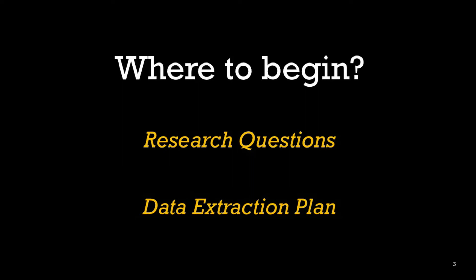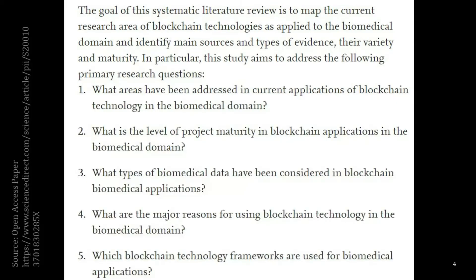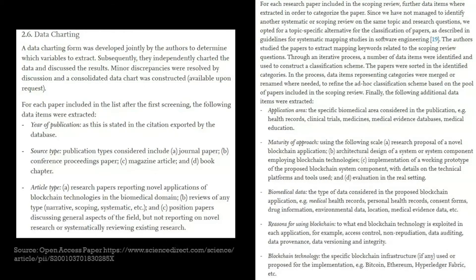Those are the two things we would need to begin the work, and of course you need to have your papers that you have searched. To connect these three dots, I want to show you this paper which is on blockchain and healthcare. This slide here shows the research questions that they have identified for this paper. This is their data extraction plan — here they are calling it data charting — but basically this is telling you what information needs to be extracted from each of the primary studies that you have shortlisted based upon your inclusion and exclusion criteria.